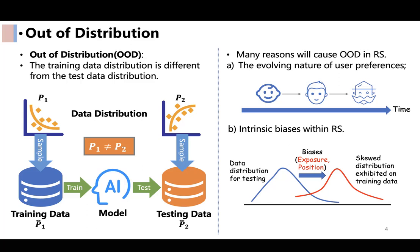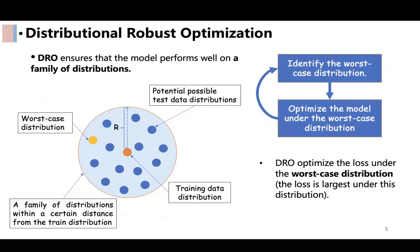Our work focuses on enhancing the robustness of graph-based recommendation systems against distribution shifts. We consider employing distributional robust optimization to tackle this issue. The method aims to identify the worst-case distribution within a family of distributions and optimizes the model under the most challenging scenario, so the model trained with DRO can perform well on a family of distributions.